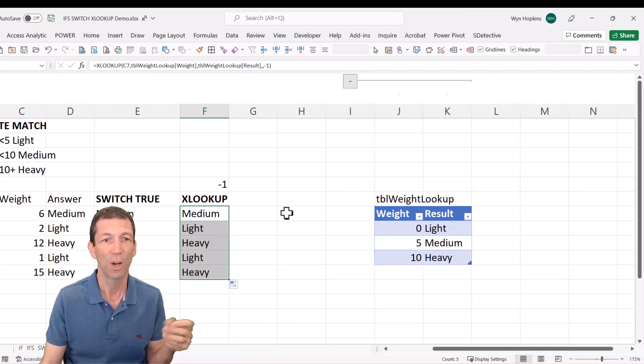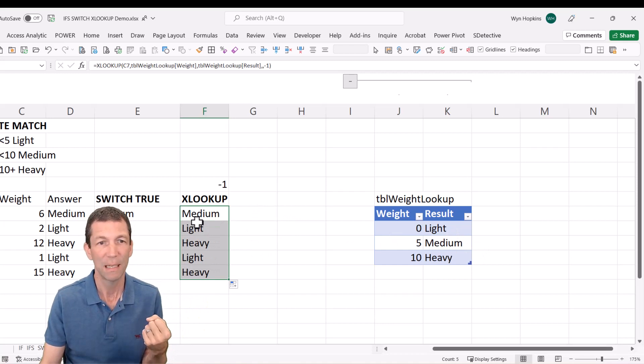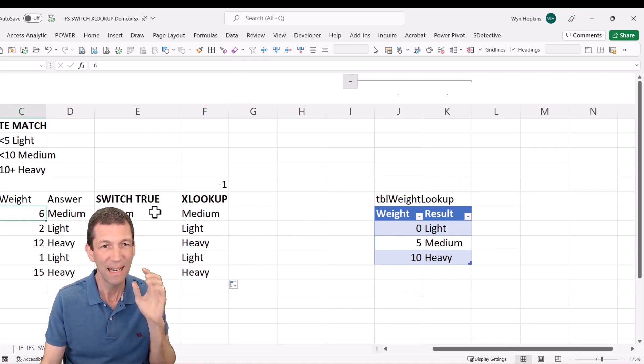Beautiful. All right so light, medium, heavy because 6, the next smaller item, then that is in this list, hits the 5, so therefore returns medium.